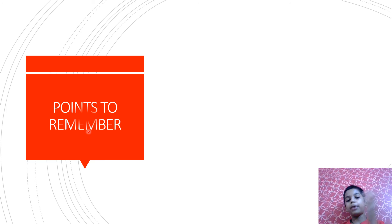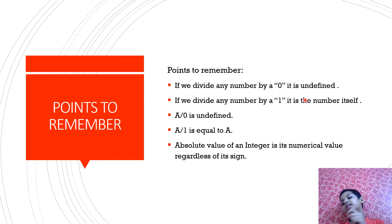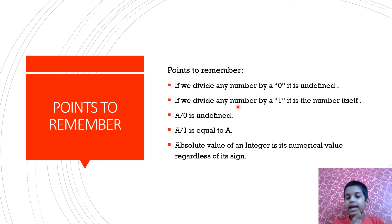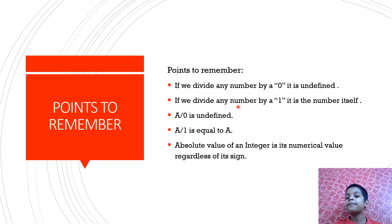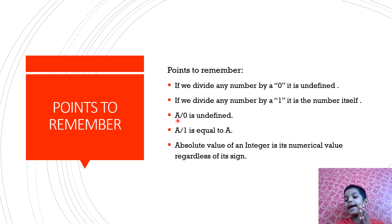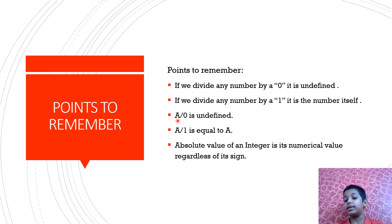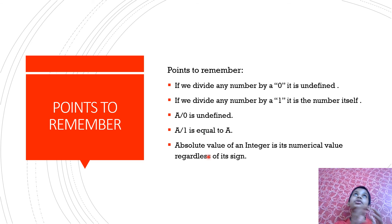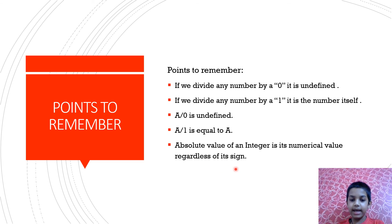Here are a few points to remember. If we divide any number by 0, it's completely undefined. If we divide any number by 1, it's the number itself. If we take variable a divided by 0, where a can be any number, then a divided by 0 is undefined. But a divided by 1 is equal to a. The absolute value of any integer is its numerical value regardless of its sign.